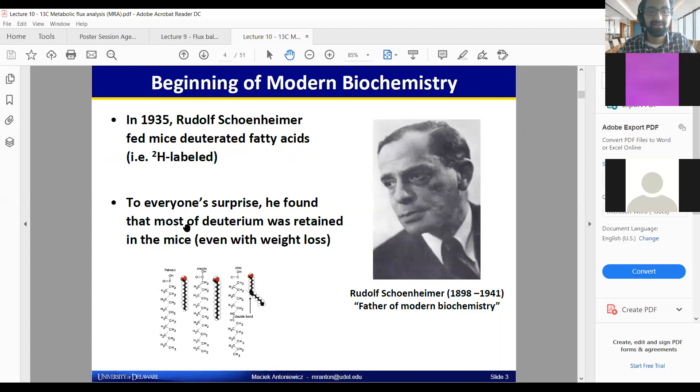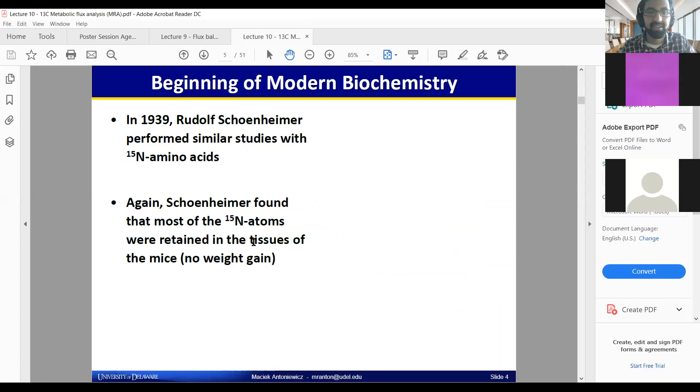In this case, deuterated fatty acids. Most of the deuterium was still in the mice. It had ended up getting stored in their fat reserves.